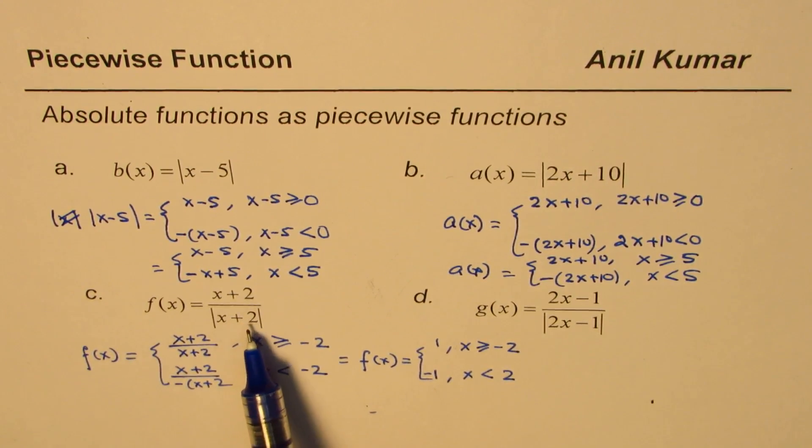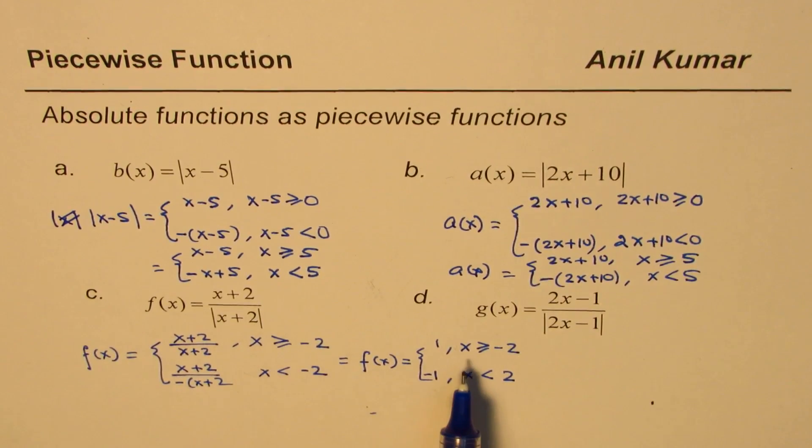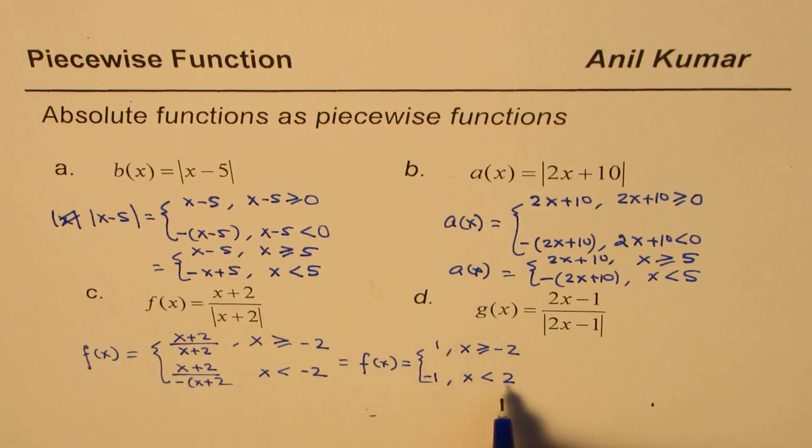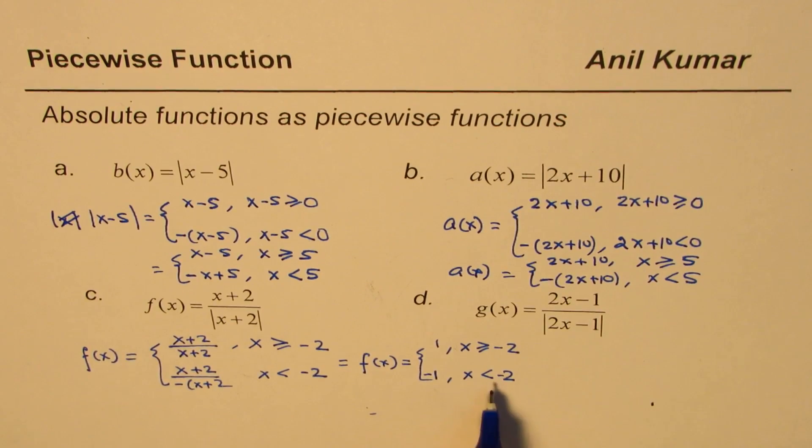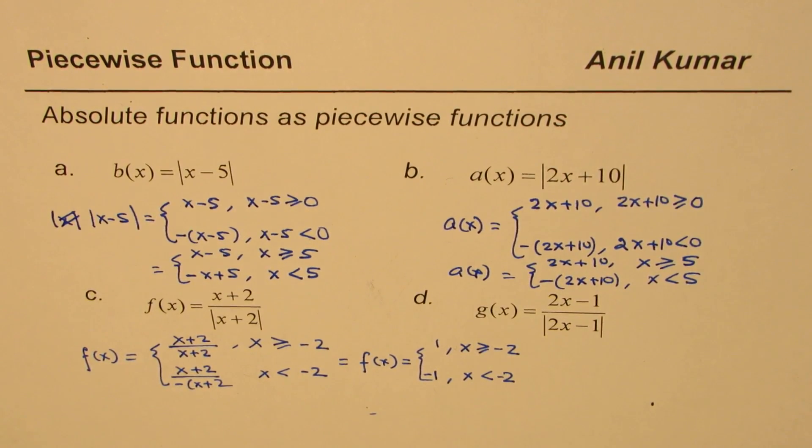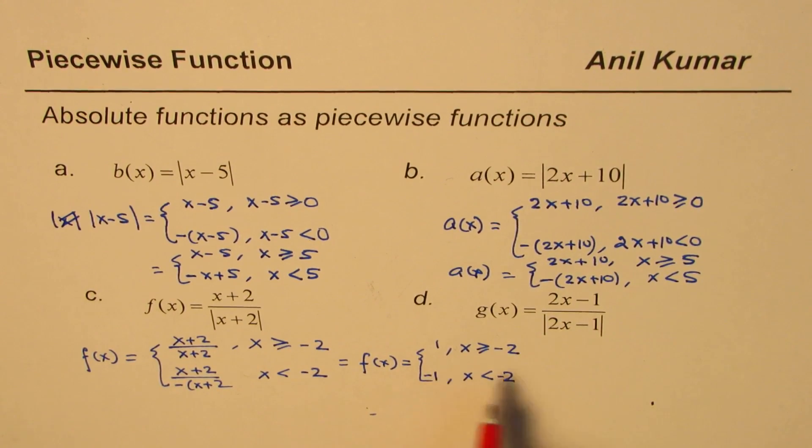So it is either plus 1 or minus 1 depending on the x value. If it is greater than equal to minus 2 it is plus 1. If it is less than minus 2, in that case it is going to be minus 1. So that is how you could actually rewrite these absolute functions as piecewise functions.